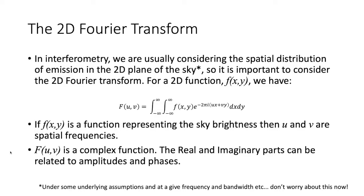So if you have a function f(x,y) then the Fourier transform gives you what is shown in the equation here. If f(x,y) is a function representing the sky brightness distribution, then u and v in the Fourier transform are spatial frequencies. The Fourier transform F(u,v) is a complex function and the real and imaginary parts can be related to amplitudes and phases, and that is important as that is what we can measure with an interferometer.